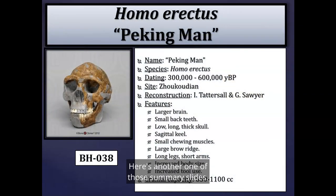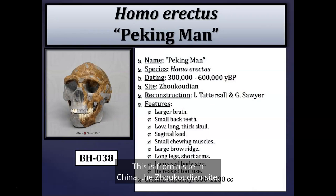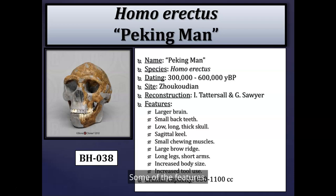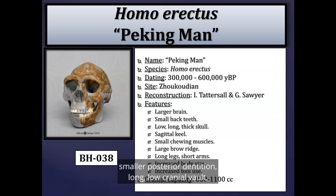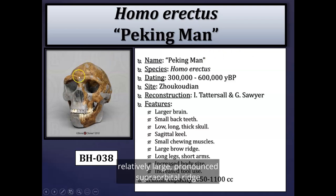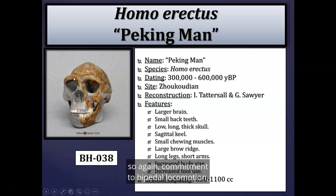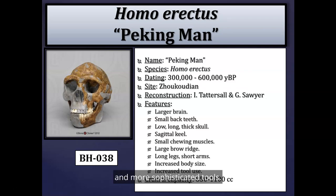Here's the summary slide for Peking Man, one of the most famous fossils attributed to Homo erectus, from the Zhoukoudian site in China, dating between about 300,000 to 600,000 years before present. Features include a larger brain compared to Homo habilis, smaller posterior dentition, long and low cranial vaults, a sagittal keel, relatively large and pronounced supraorbital ridge or brow ridge, and long legs with short arms. This reflects commitment to bipedal locomotion, increased overall body size, and more sophisticated tool use.